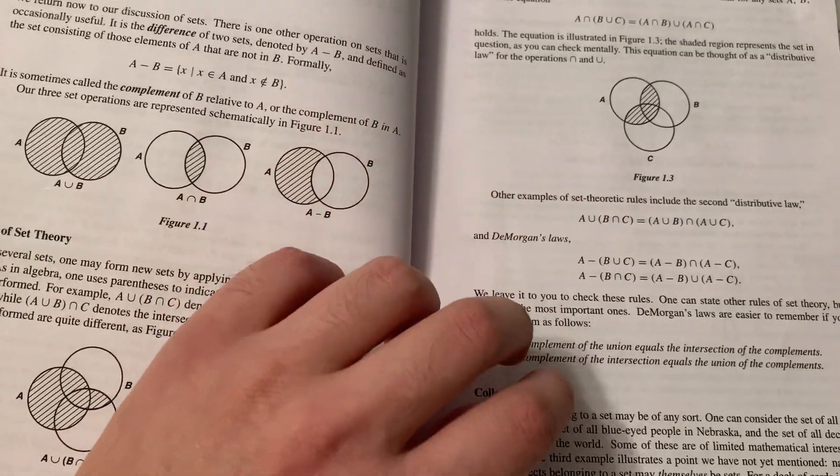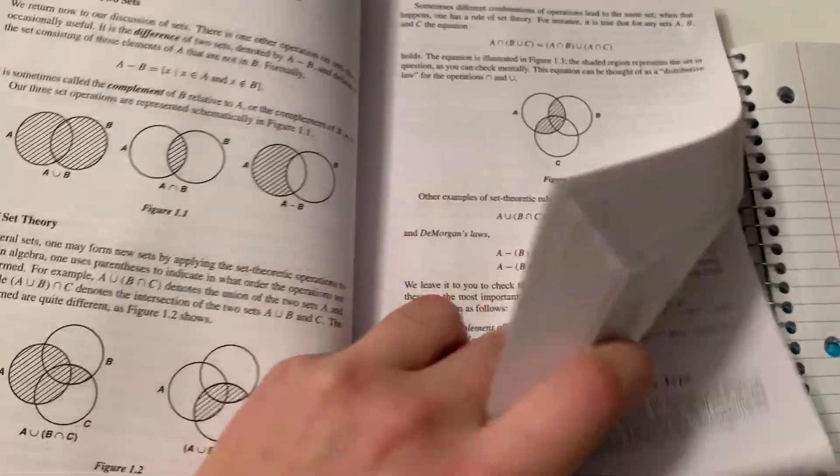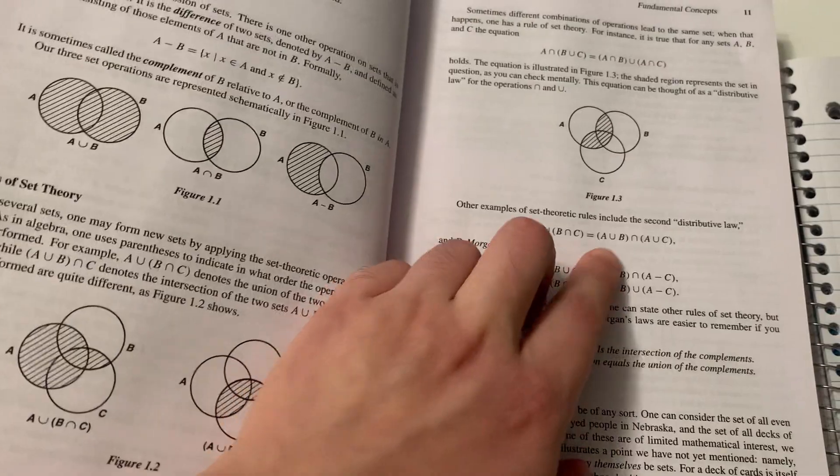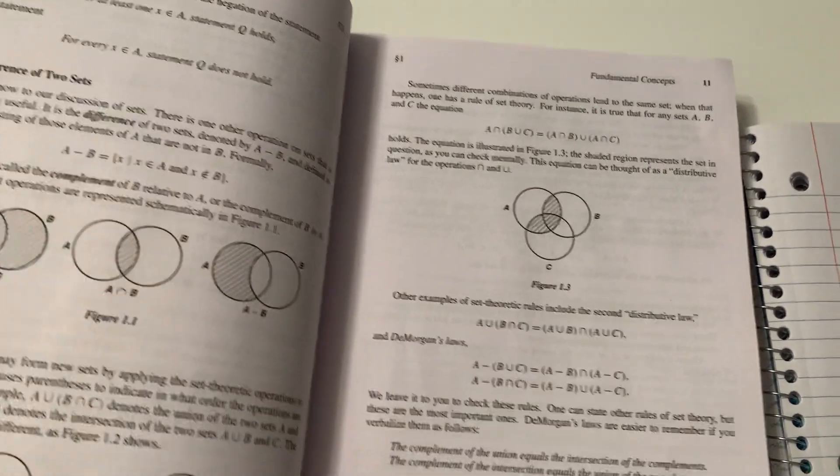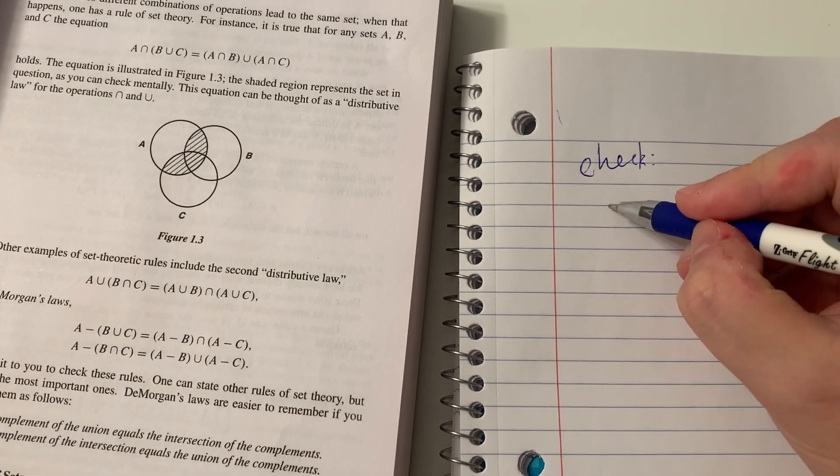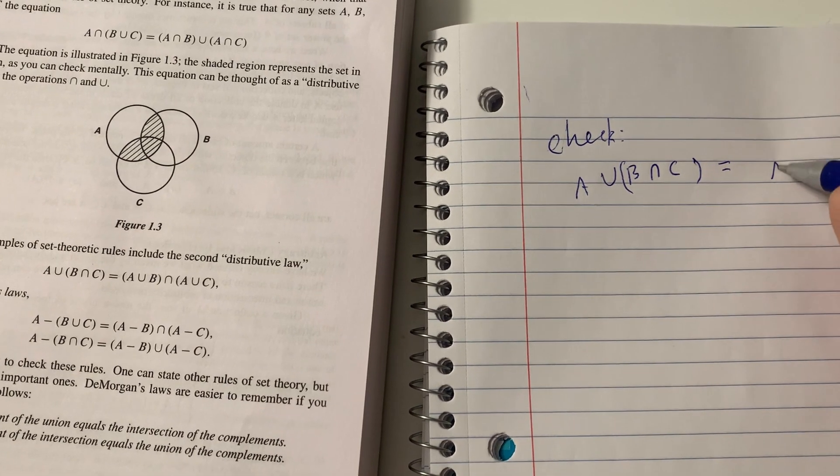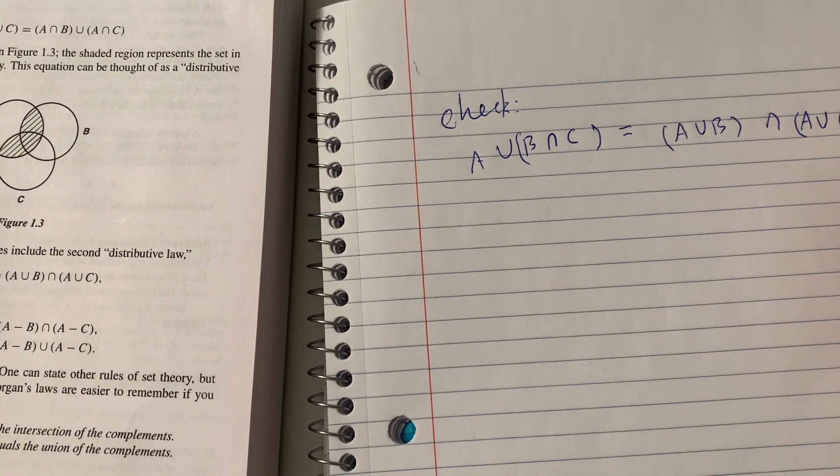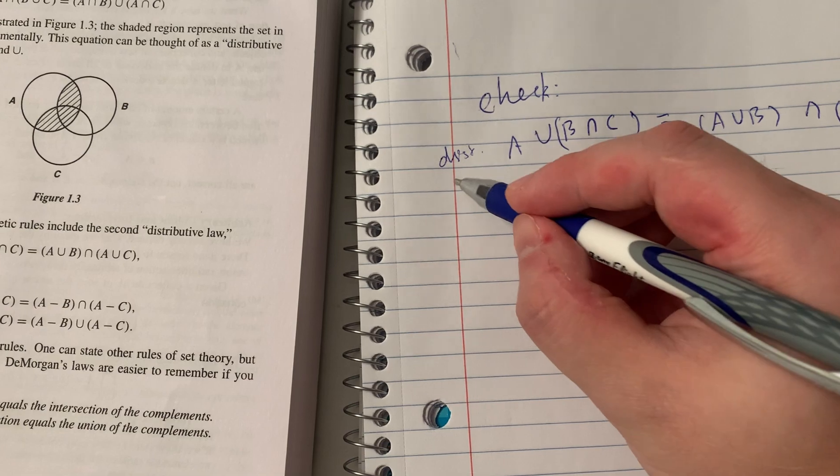So here it says distributive law and De Morgan's law. So we have these three laws written here. And in case you cannot find the keywords quickly, you can always go back to the index. It's what it's for, right? So for you to quickly reference a particular important concept. So here we have the distributive law and De Morgan's law. So let's follow the author's advice and check these are actually true. So immediately go to your notebook or worksheet, write this down.